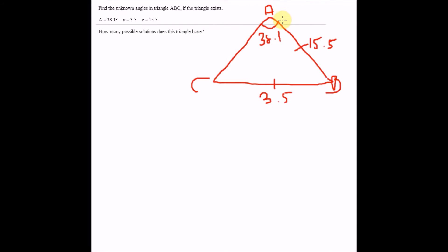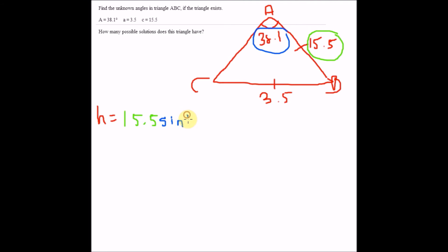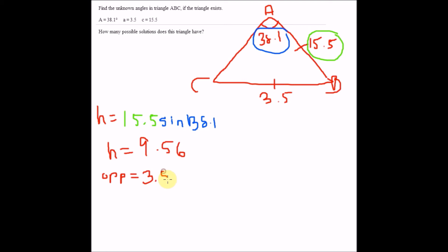Drawing triangle ABC: angle A is 38.1°, side A is 3.5, and side C is 15.5. Like our other examples, we want to find H. The adjacent side to the given angle is 15.5, so H = 15.5 × sine(38.1°), which equals 9.56.